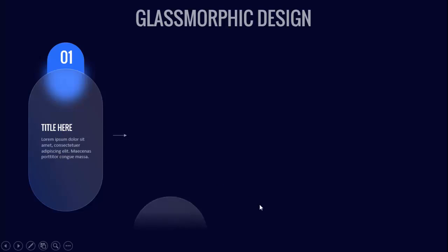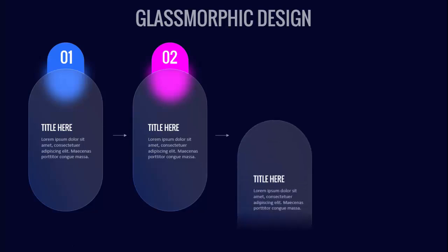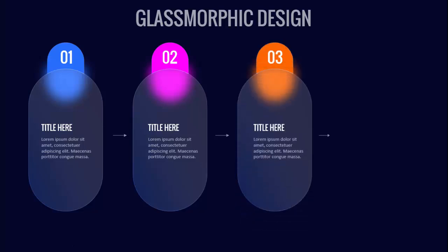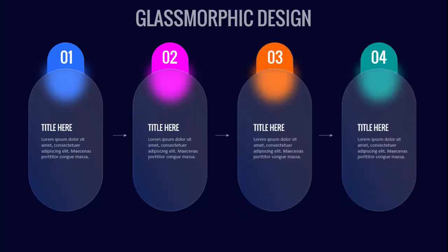When I click with a different color option, it comes — option number two, option number three, and option number four. So depending on your requirement, you can increase or decrease these options. I have created one more slide where I have just put one color — only blue — so depending on your requirement you can choose the slide.